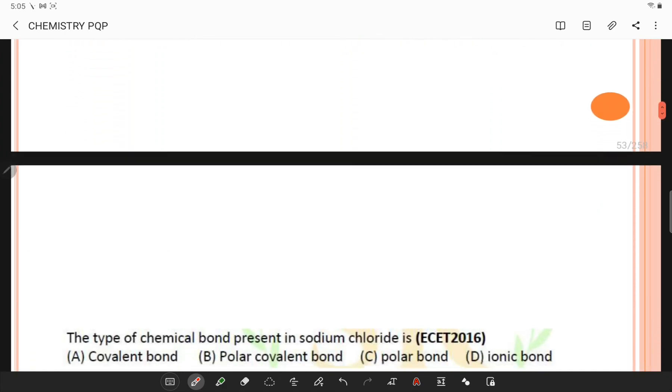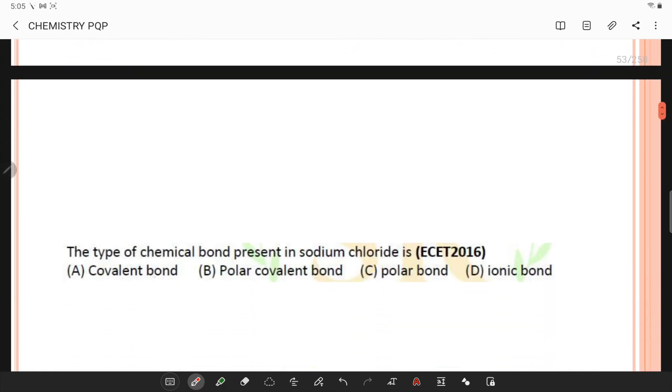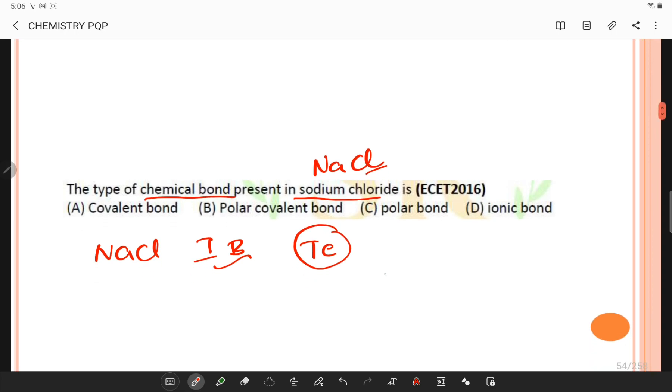Let's go to the next question: The type of chemical bond present in sodium chloride. Sodium chloride has ionic bond in which transfer of electrons will happen from atom one. When a metal and a non-metal react, they form an ionic molecule. Sodium gives its one electron to chlorine to form NaCl.